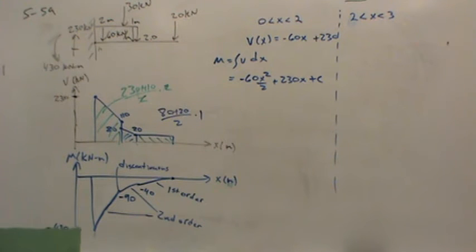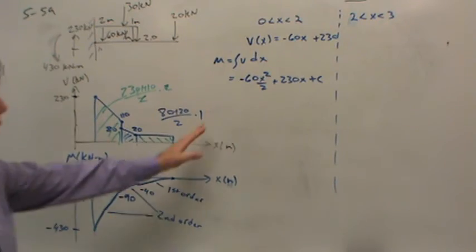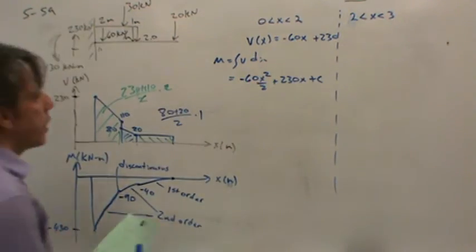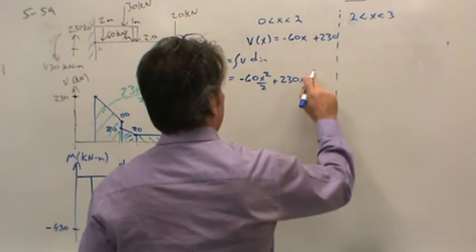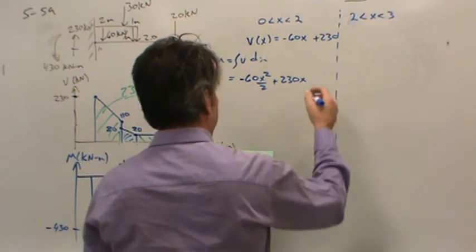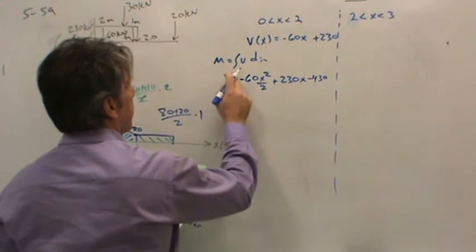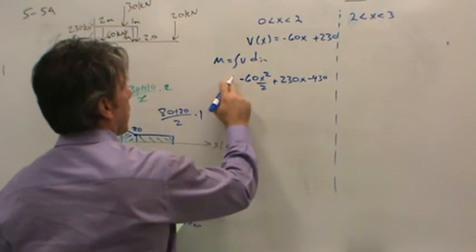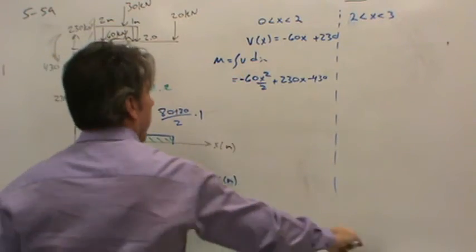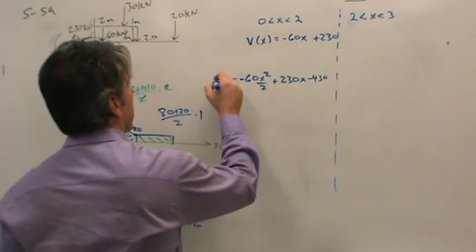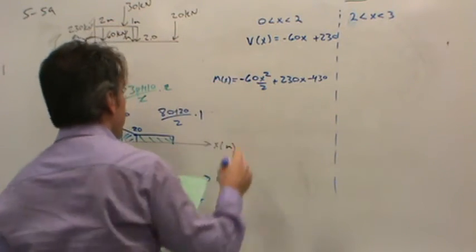Well, we can plug in a few different places. The easiest is at x equals zero. Because at x equals zero, these terms go away, we should get negative 430. So that means this constant is negative 430. So there is our moment as a function of position.